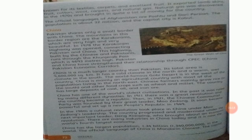China is much larger than Pakistan; its total area is 9.6 million square kilometers. It has a cold climate in the north and a warm, wet climate in the south. The world-famous Gobi Desert is in the west of the country. China is mainly an agricultural country, with most of the population living in the northeast. Chinese farmers mainly grow rice in the south and other food crops such as wheat and millet. The country has large deposits of coal, oil, and iron ore.